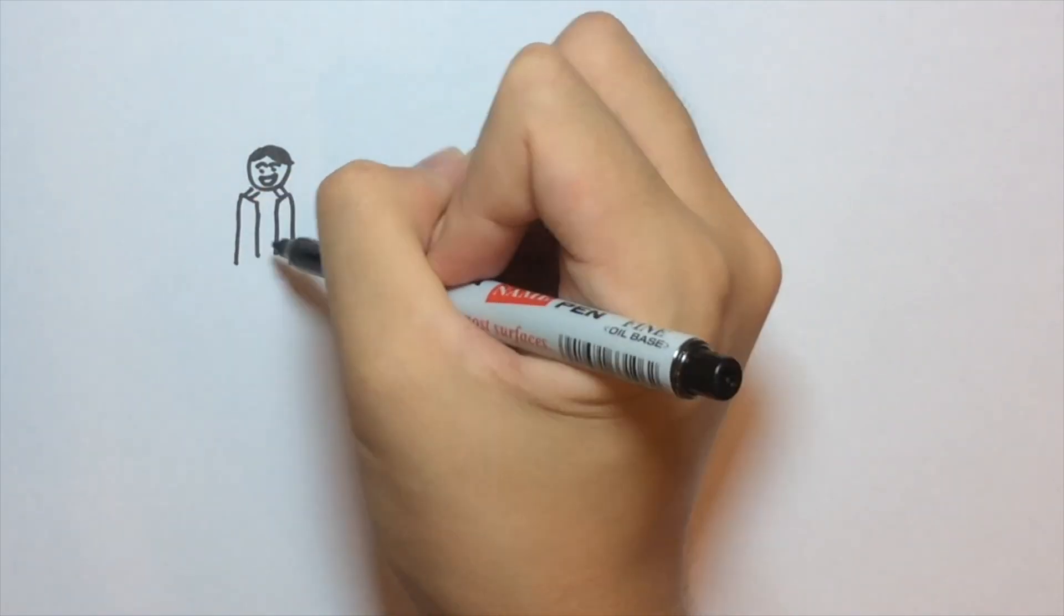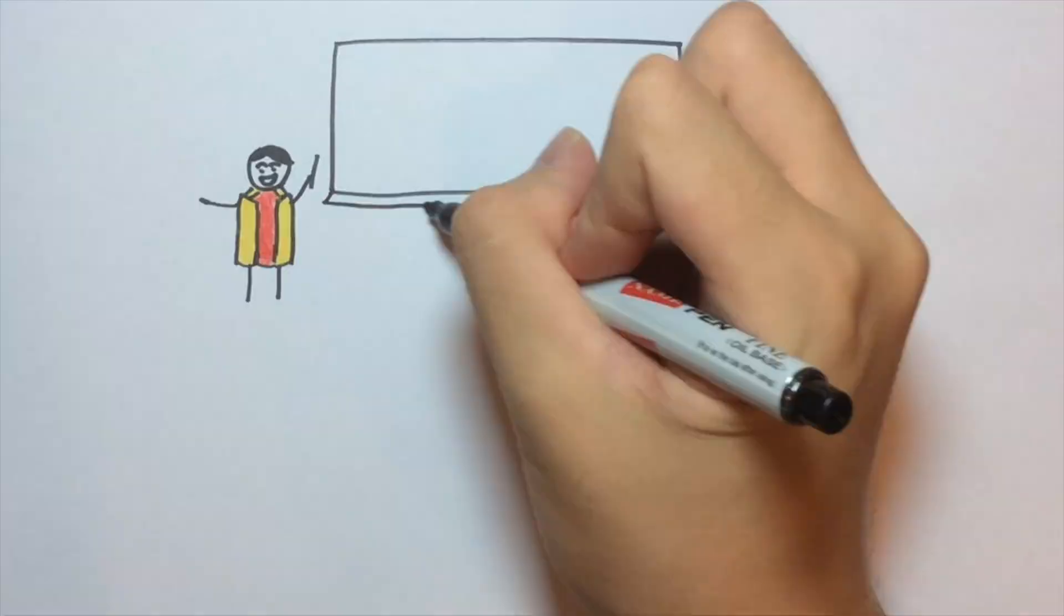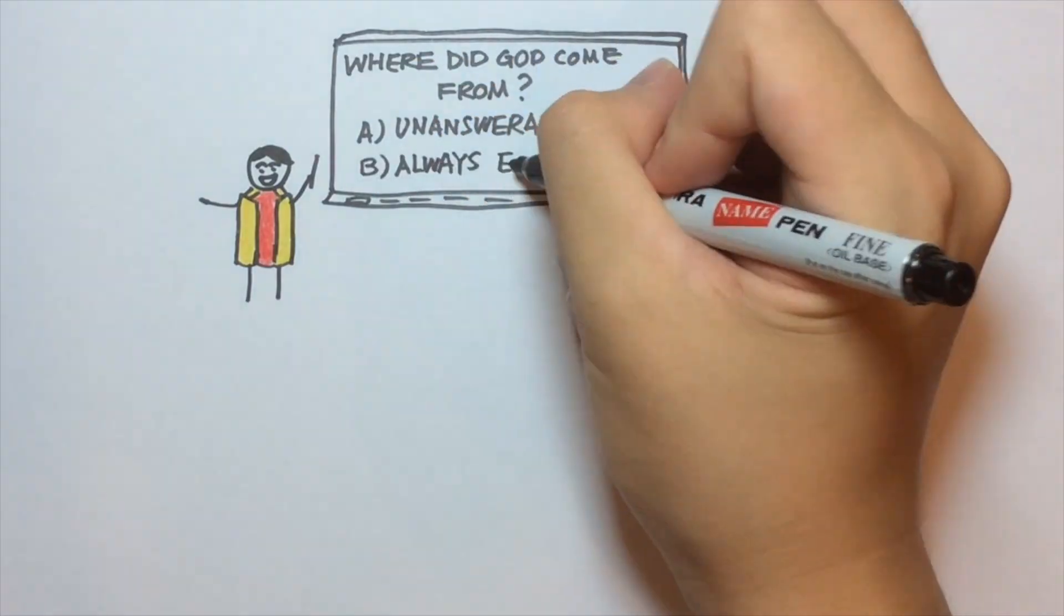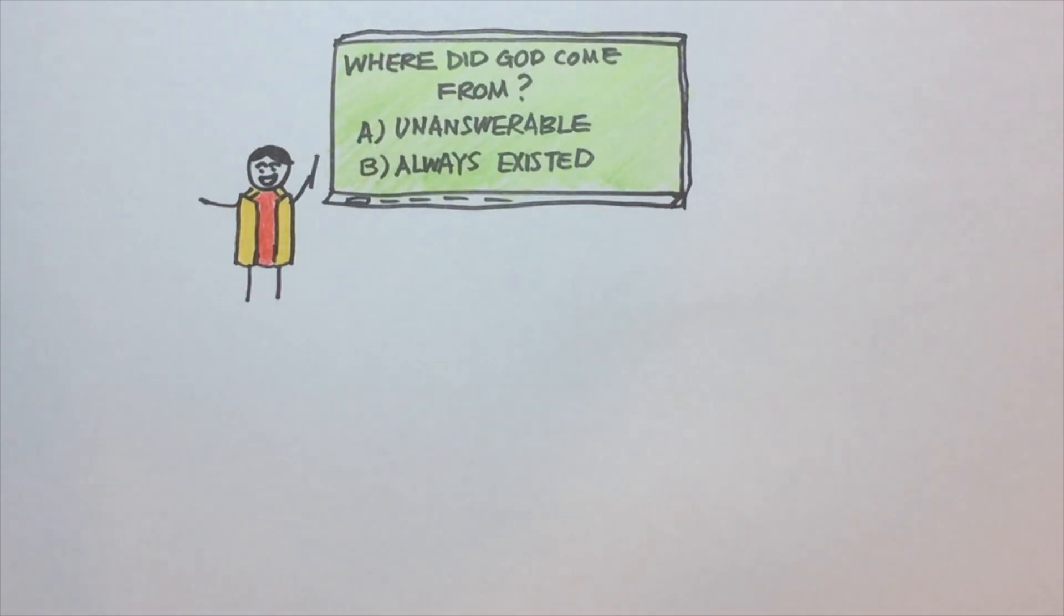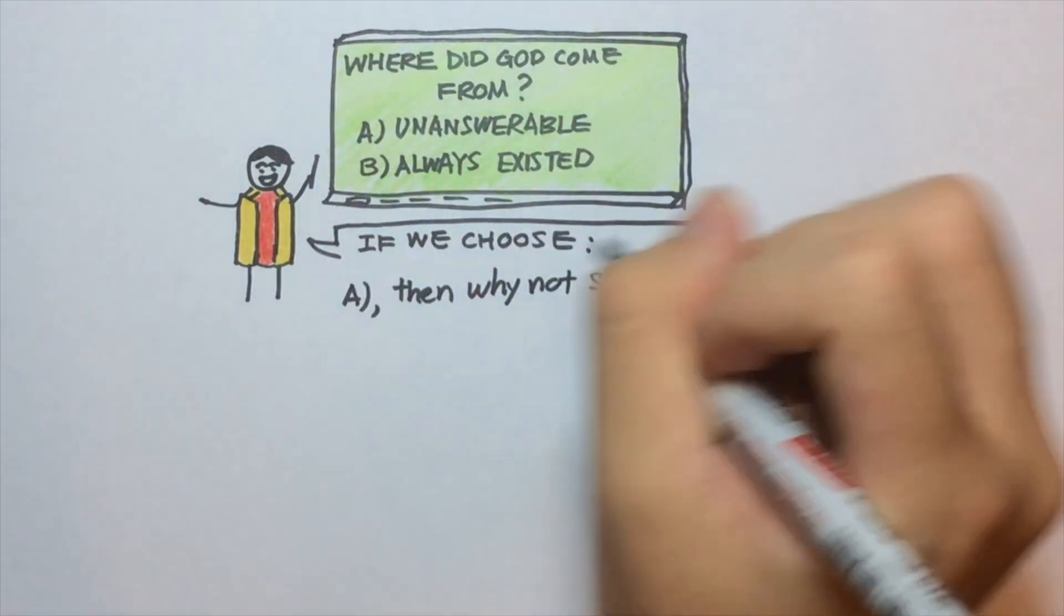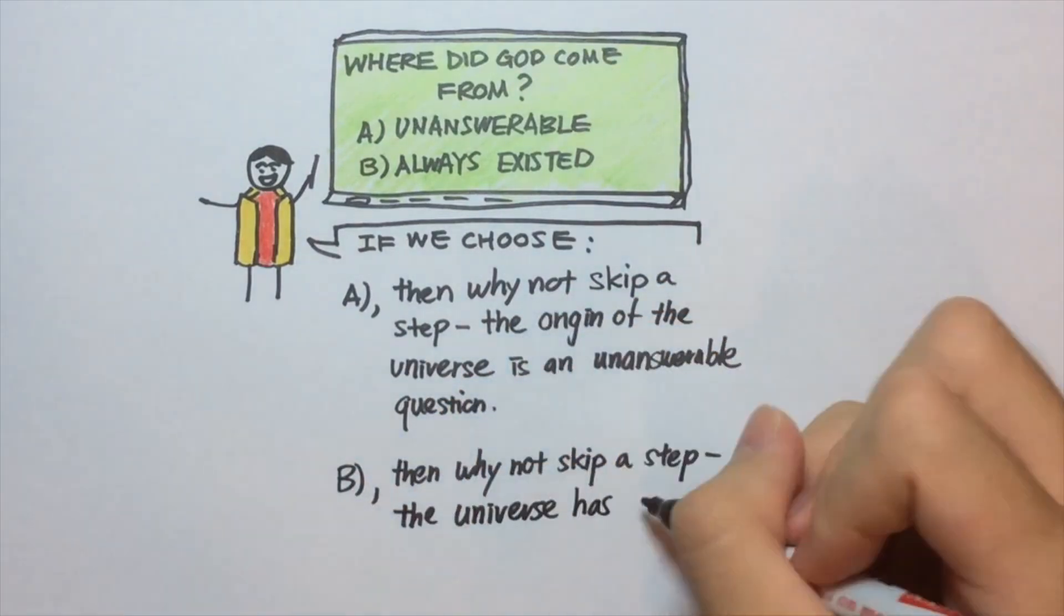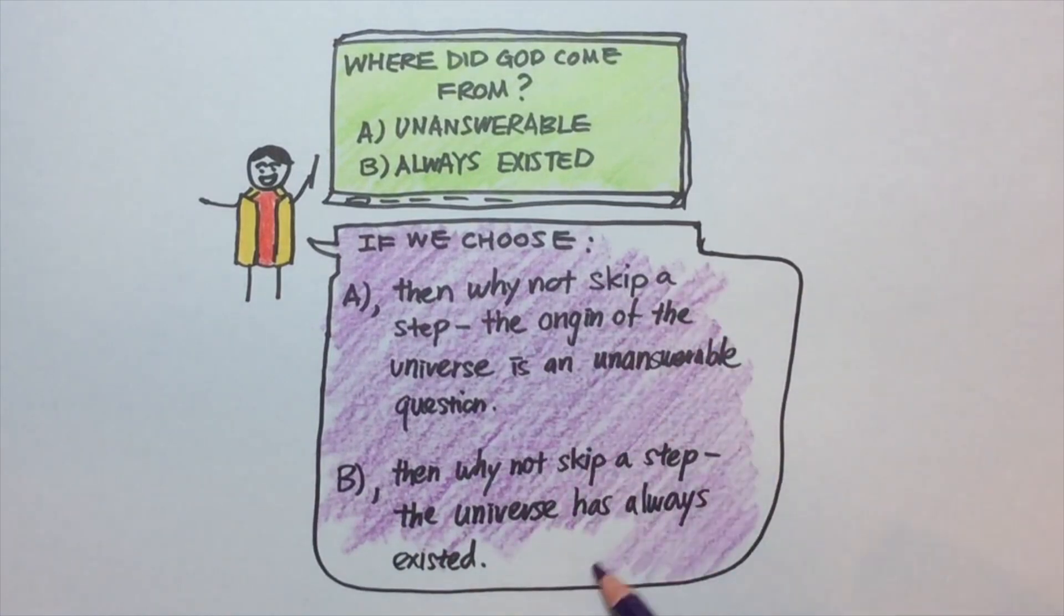If we were to accept the suggestion that God has created the universe, then we would have to answer another question. Where did God come from? If this is an unanswerable question, then why not skip a step and suggest that the origin of the universe is an unanswerable question? If we say that God has always existed, why not skip a step and say that the universe has always existed without need for being created?